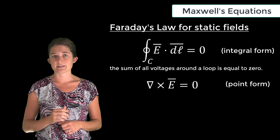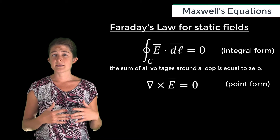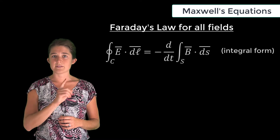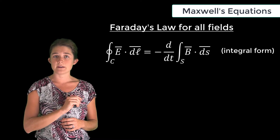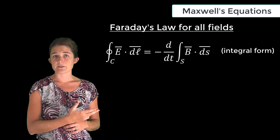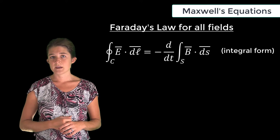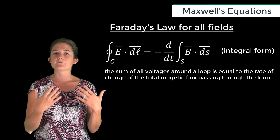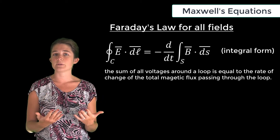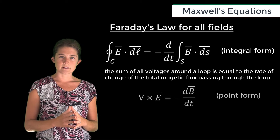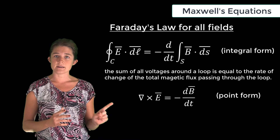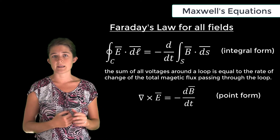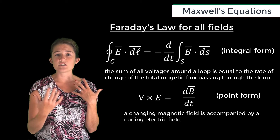To make Faraday's law valid for time-varying fields, we have to add an extra term. In integral form, the integral of E dot dl around a closed loop equals the negative time derivative of the integral of B dot ds — in other words, the sum of voltages around a closed loop equals the rate of change of the total magnetic flux through that loop. Equivalently, in point form, the curl of the electric field equals the negative time derivative of the magnetic flux density. A changing magnetic field will be accompanied by a curling electric field.